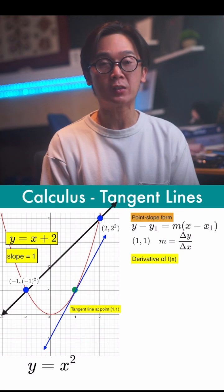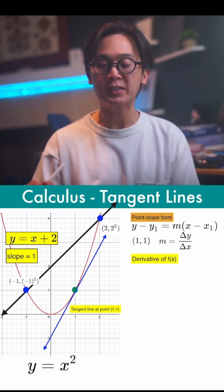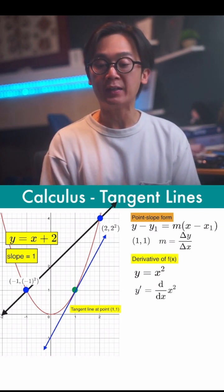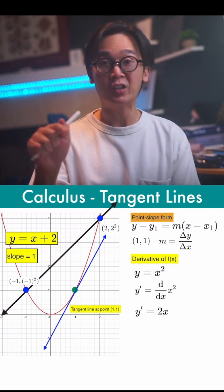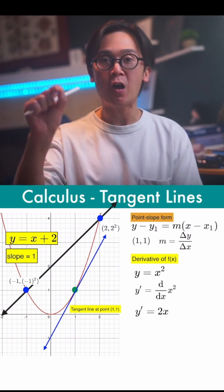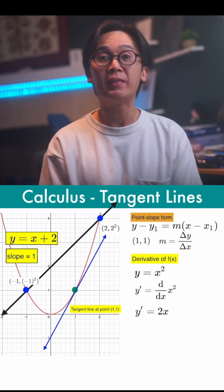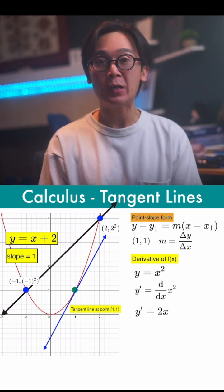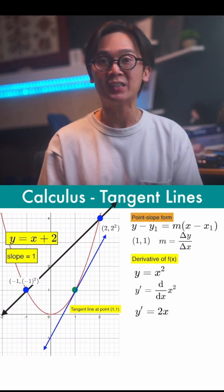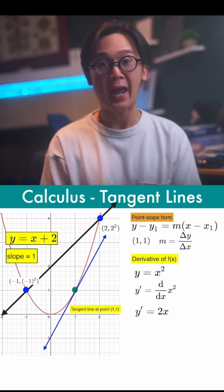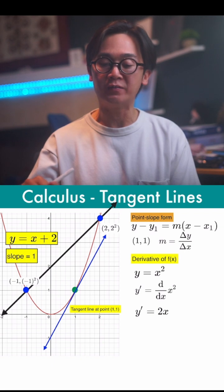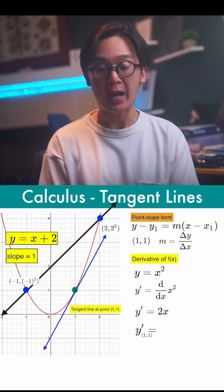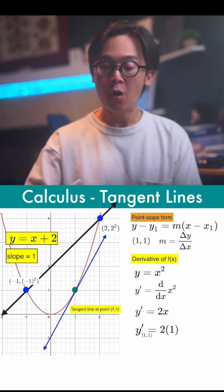This is where the derivative is going to come into play, and this is one of the many applications of the derivative. By finding the derivative of y is equal to x squared — which is y prime — we'll be able to find 2x as the equation of our slope for that particular function. This means that at any point on y is equal to x squared, the slope at that point is going to be 2x. So depending on the value of x, our slope will also change, but the equation of the slope is always 2x. By using this derivative as our slope formula at x equal to 1, the slope of the tangent line is simply 2 times 1, or 2.